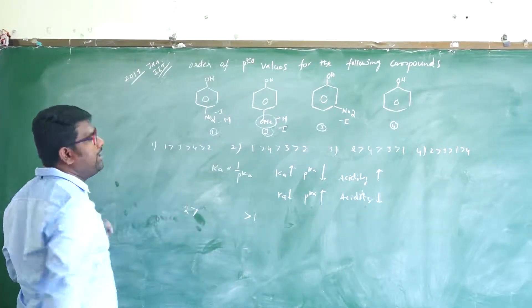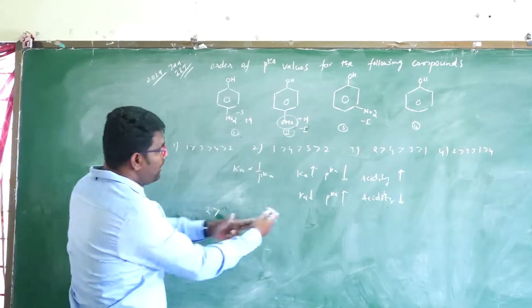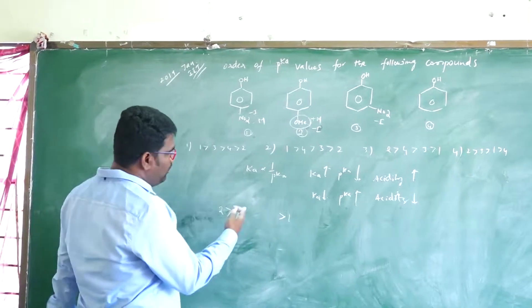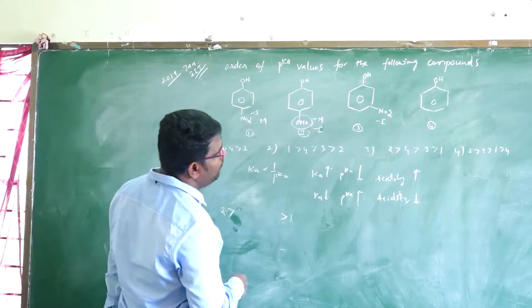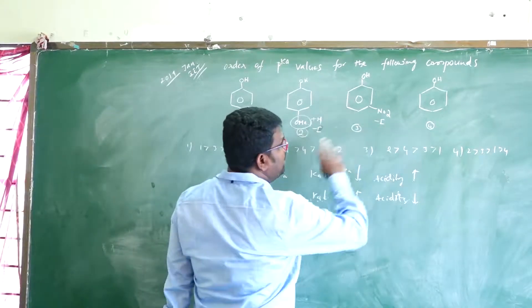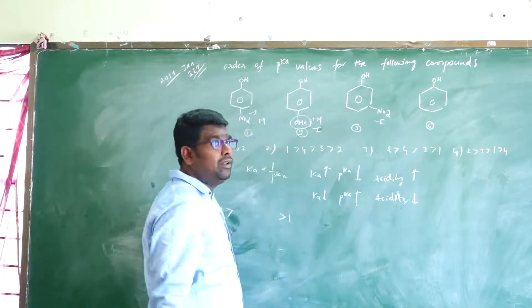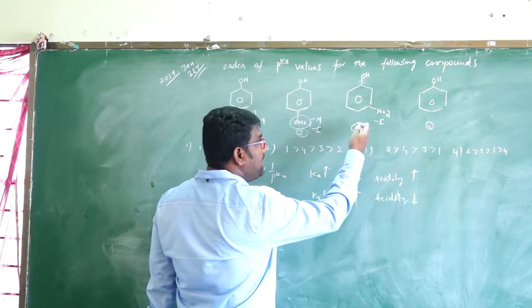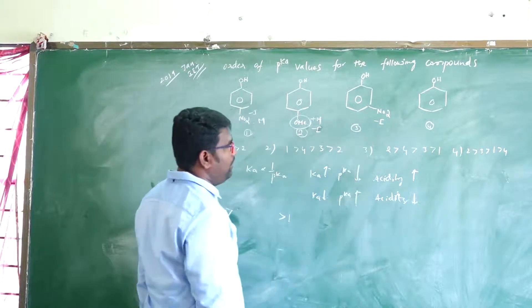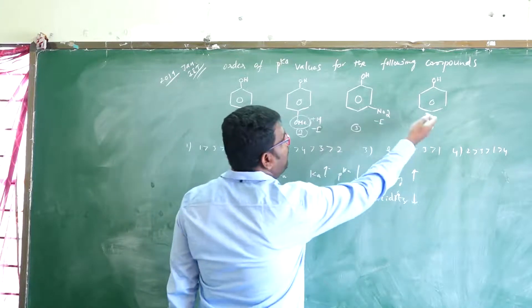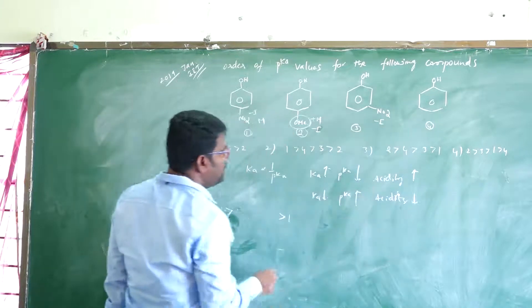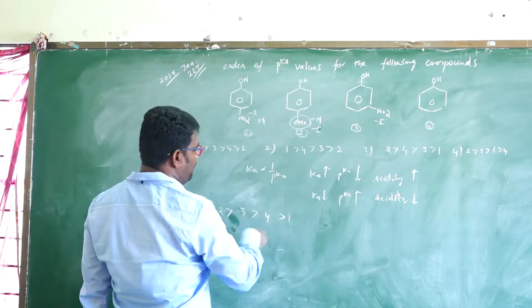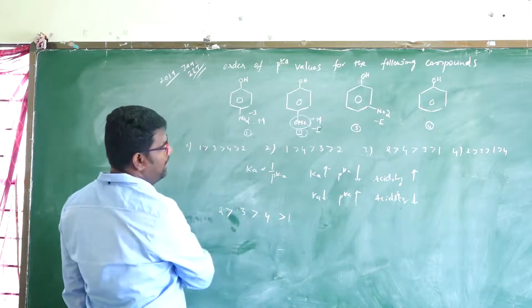Therefore, the second compound has the highest PKA value, and the first compound has the least PKA value. What about third and fourth? The third one is more acidic than the fourth, so third has a lower PKA value than the fourth. So the ordering continues: next is the third one, and then obviously the fourth one.